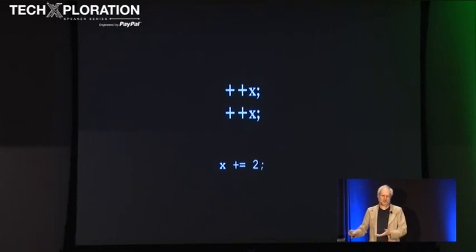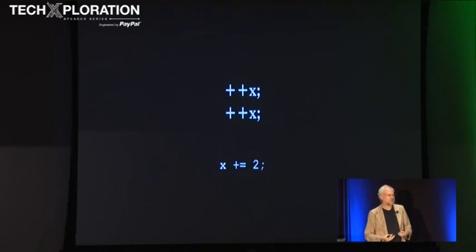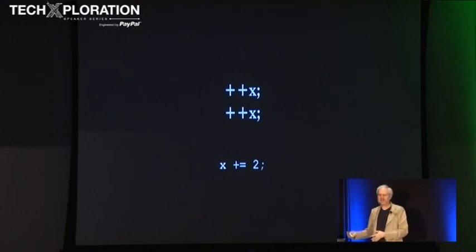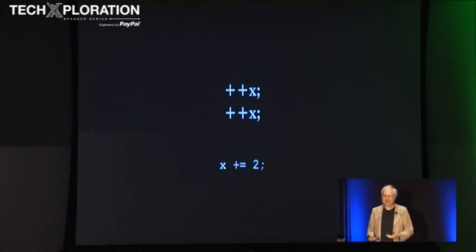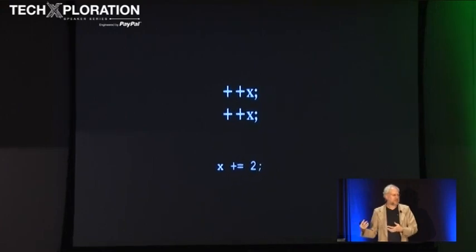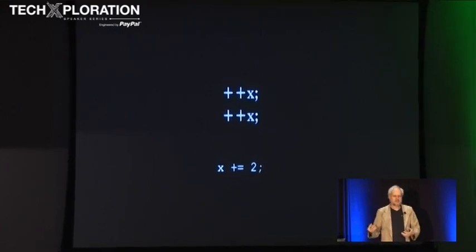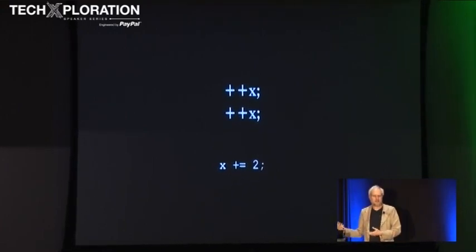and it would have been much cleaner. That raises a question: why do we need a completely different syntactic form for adding one to something? Why should one be different than all of the other values we'd ever add? This is an exceptional piece of syntax that I just don't see the use for.